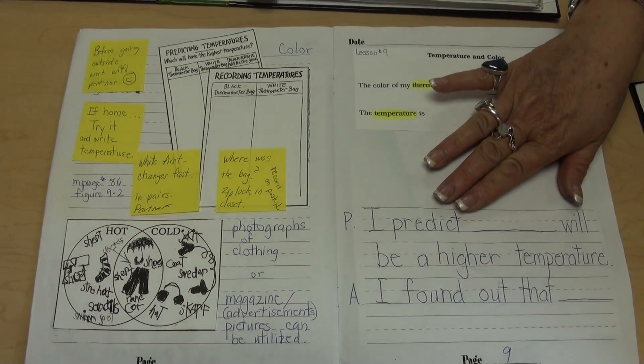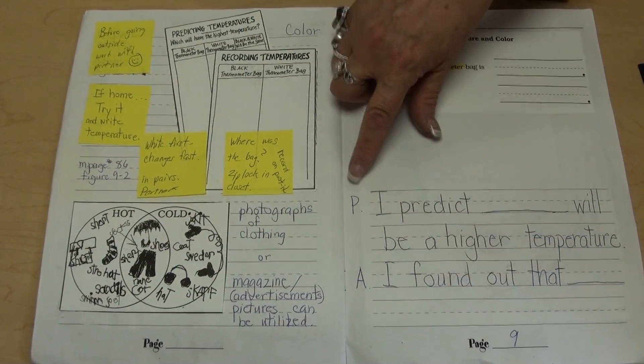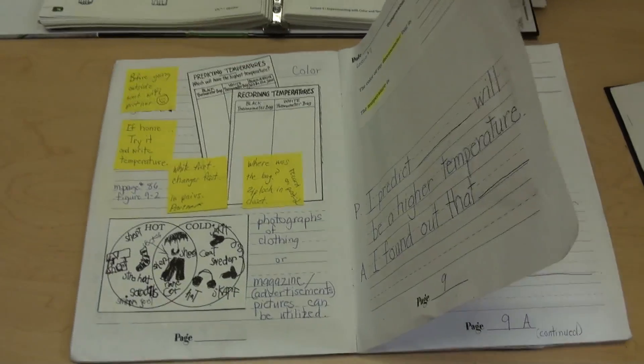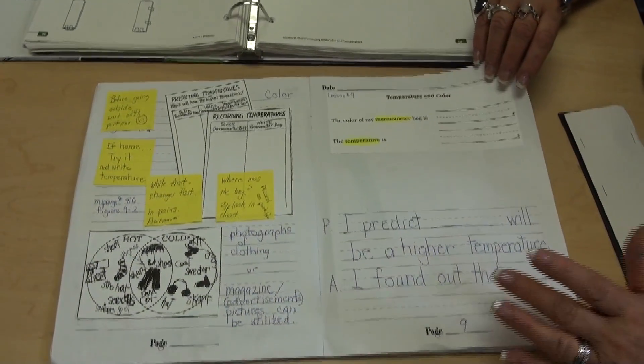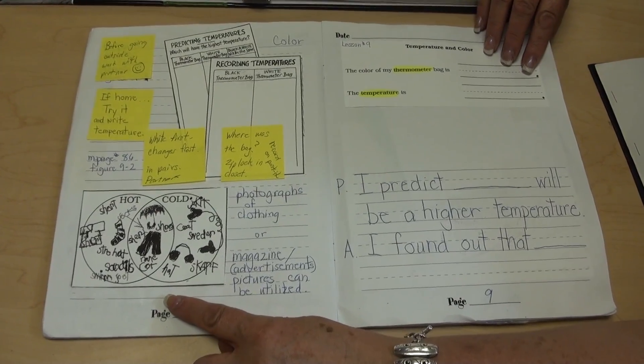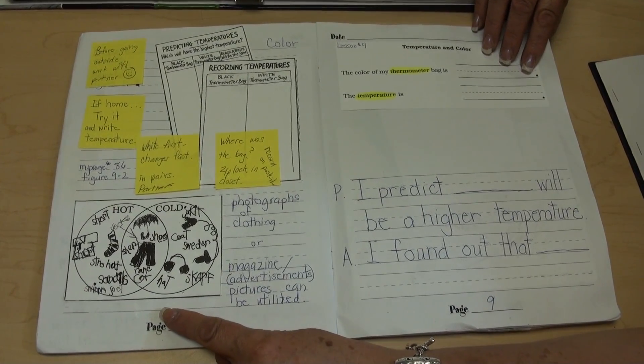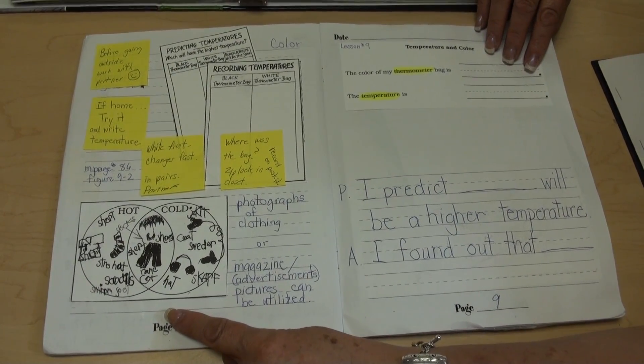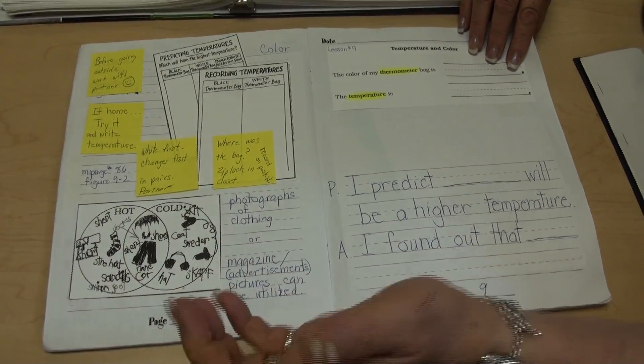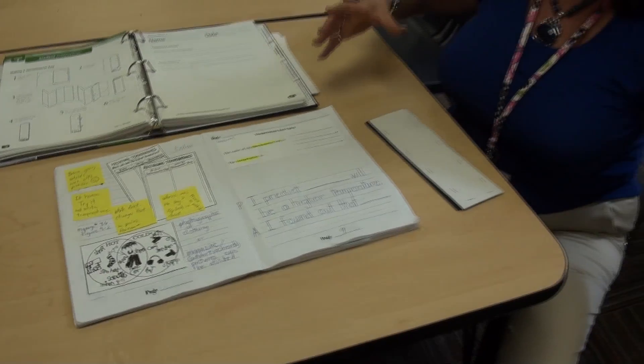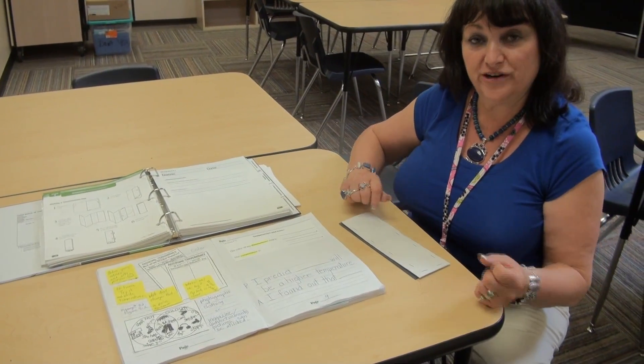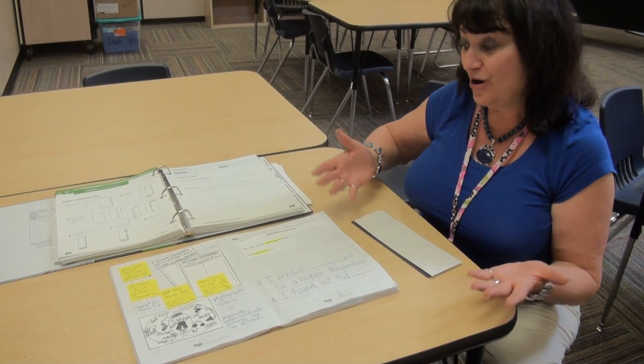So they have their prediction, and then this is their actual results. Once this lesson part is completed, an extension for this is providing the children with an opportunity to think about clothes that they would wear in the different types of temperature. You could actually bring in different types of clothing in a basket and have a circle on the carpet or on a floor area in a center. Have children sort according to the temperatures, whether they're warm, hot, or cold.